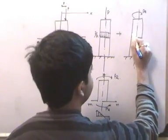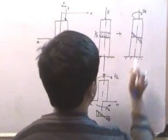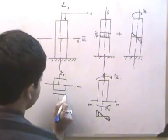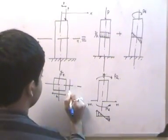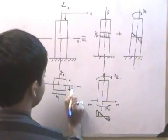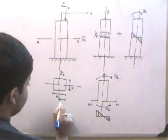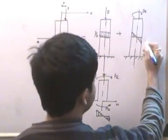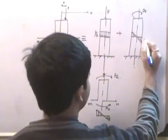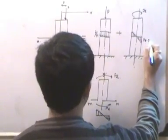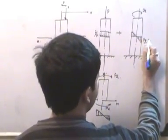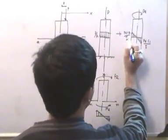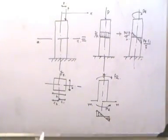The stress distribution shows compressive stresses on one side and tensile stresses on the other. For the cross section with height h and width b, with distances c1 and c2 from the neutral axis, the compressive stress equals P times e times c1 divided by I, and the tensile stress equals P times e times c2 divided by I. Now we need to find out the conditions to eliminate tensile stress.